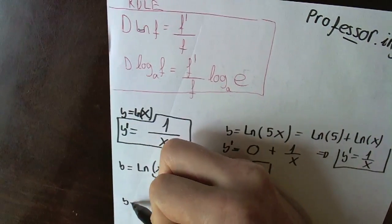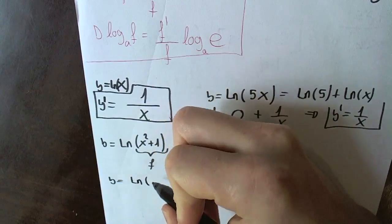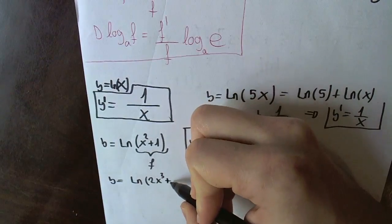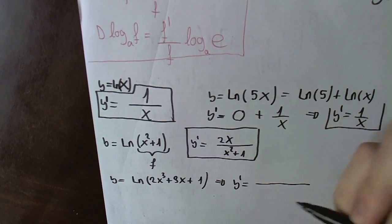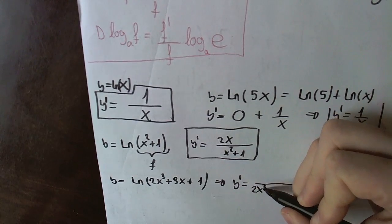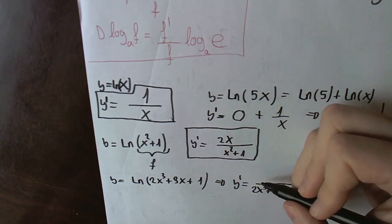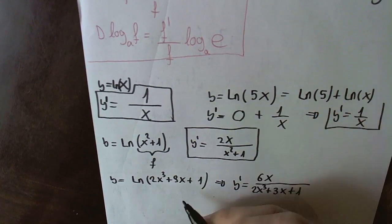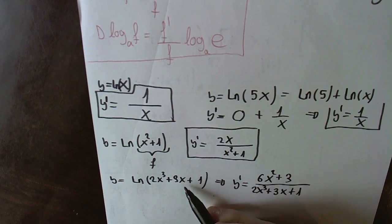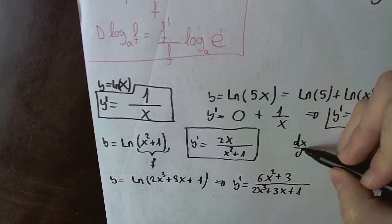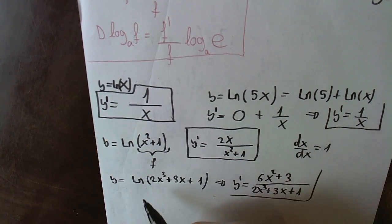Now I'm going to write a little faster, because this is too easy for you. If they give us logarithm of 2x cubed plus 3x plus 1, the derivative is: in the denominator we write f, which is 2x squared plus 3x plus 1. In the numerator, the derivative — the 3 goes multiplying down, 3 multiplied by 2 is 6, x to the power 3 minus 1 is 2, plus 3 is the derivative of 3x. The derivative of x is always 1, so the derivative of 3x is just 3. The derivative of 1 is 0. So this is the derivative of this function.